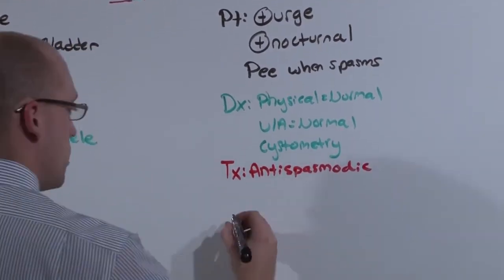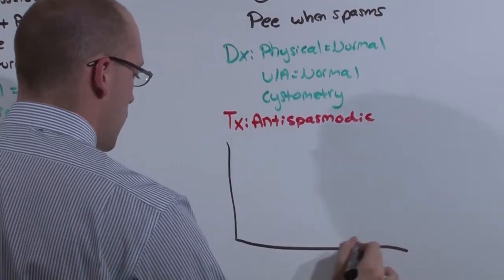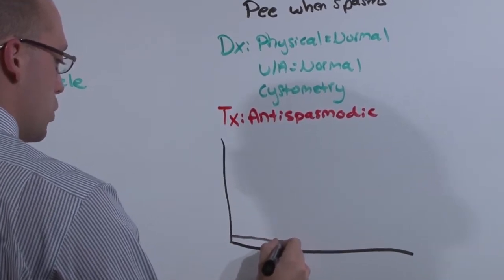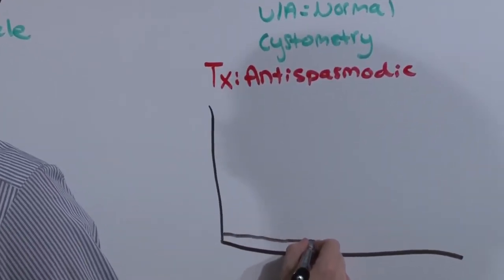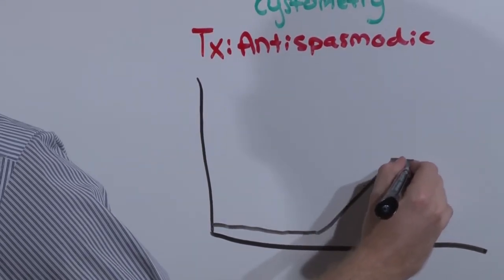But let me show you what cystometry looks like. You have the patient urinate. So the starting volume of urine is very low. Eventually the kidneys will continue to make urine and the volume of the bladder will increase. It will max out eventually.